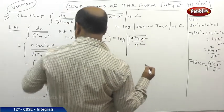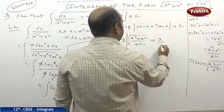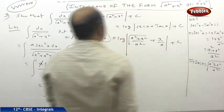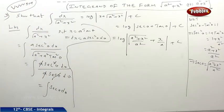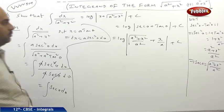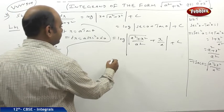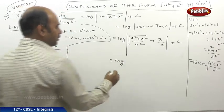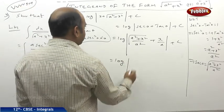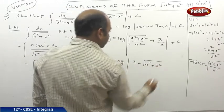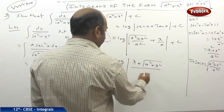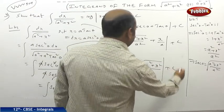So the answer equals log mod: in place of sec θ write under root of (a² plus x²)/a, and in place of tan θ write x/a, plus c. Simplifying inside the log, this becomes log mod (x plus under root of (a² plus x²)) divided by a, plus c.